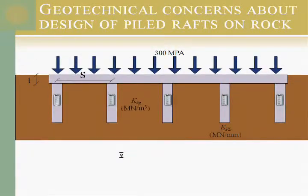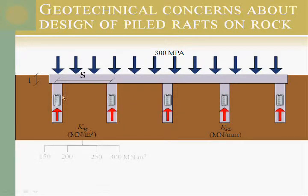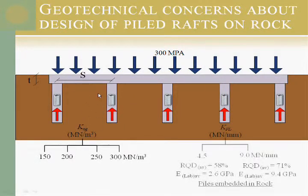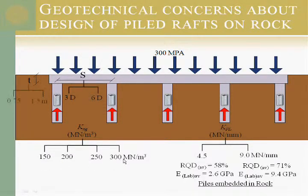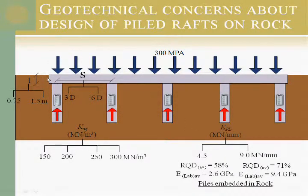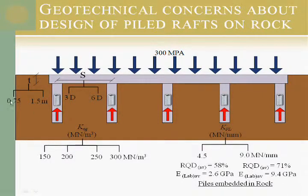The subgrade modulus of rock in Qatar ranges from 150 to 300, and the pile spring constant ranges from 4.5 to 9 per meter depending on the RQD of the rock surrounding the pile. We have raft foundation models with pile spacing from 3D up to 6D, and we can simulate the raft thickness at 0.75 m or 1.2 m to model whether it behaves as a rigid raft at 1.5 m or a flexible raft.